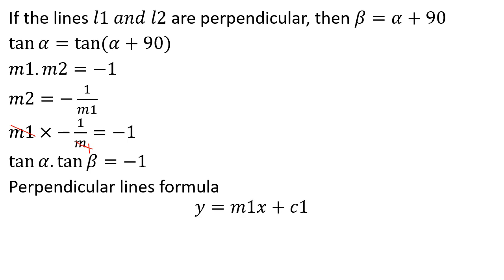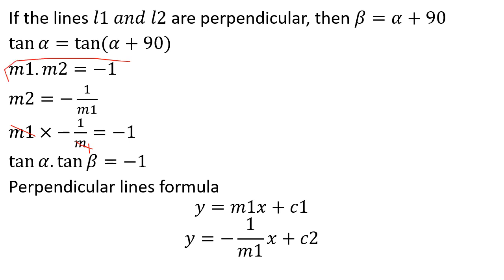To summarize: for the perpendicular lines formula, y = M1·x + c1, M2 equals minus 1 by M1. Parallel angle: M1 equal to M2. Perpendicular angle: M1 into M2 equal to minus 1. These are the two key concepts — parallel lines have equal slopes, perpendicular lines have slopes whose product is minus 1.